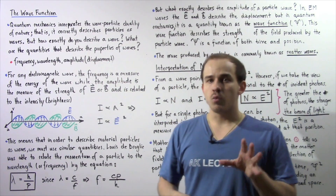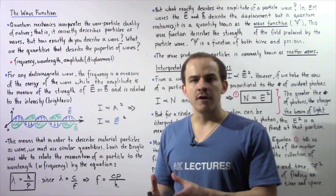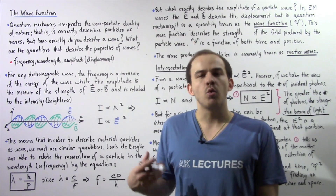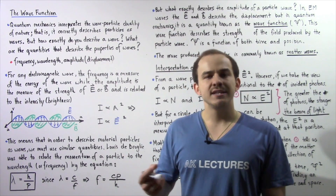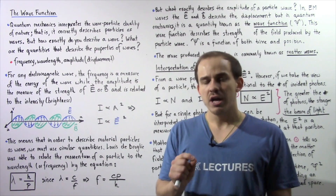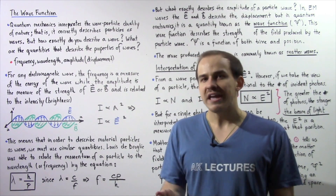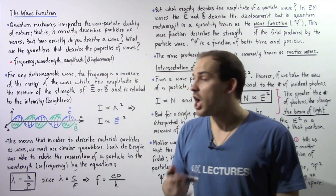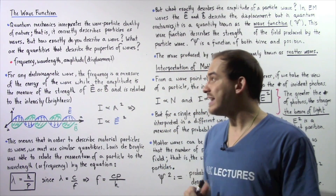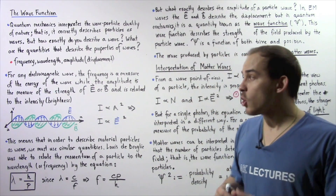For an electromagnetic wave, the frequency of oscillation is basically a measure of the quantity of energy that a single photon has within that wave. And the amplitude or displacement of an electromagnetic wave is related to the strength of the electric and magnetic field, and is also related to the intensity or brightness of that electromagnetic wave.